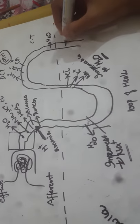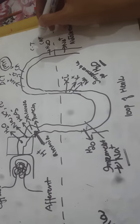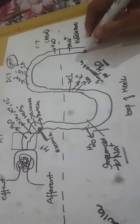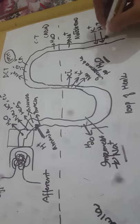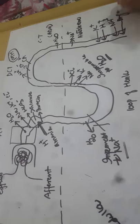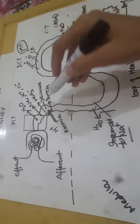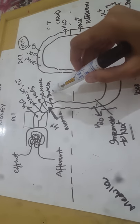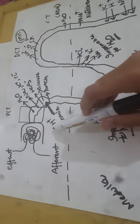Then comes the collecting duct. Water is reabsorbed here, regulated by antidiuretic hormone secreted by the posterior pituitary gland. Sodium is also reabsorbed, regulated by aldosterone secreted by the adrenal gland. The things that are excreted here are potassium, hydrogen, ammonia, and drugs. To summarize the proximal convoluted tubule: everything is reabsorbed — protein, glucose, bicarbonate, sodium, potassium, chloride, and water — while only hydrogen ions and ammonia are secreted.